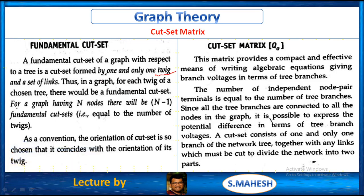One and only one twig. Based on the twig only, we are going to get the cut set matrix and a set of links. Thus in a graph, for each twig of a chosen tree, there would be a fundamental cut set. So for a graph having n nodes, there will be n minus 1 fundamental cut sets, which is equal to the number of twigs.